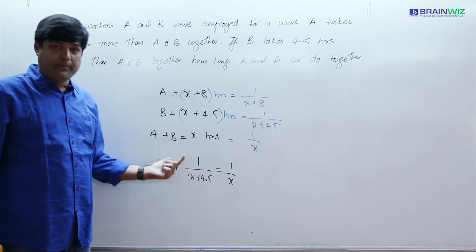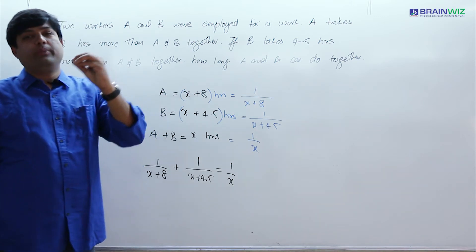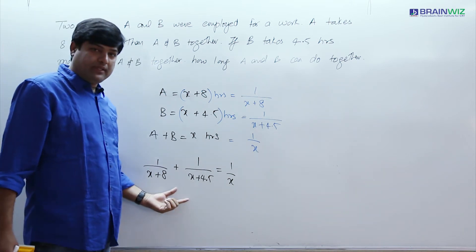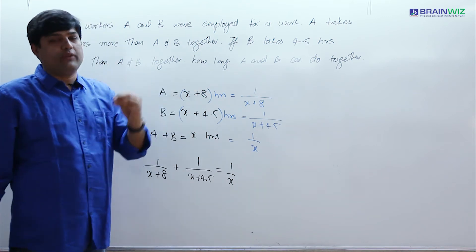In that you may have a chance of getting one positive value, one negative value. But you know that work cannot be negative. So positive values are accepted.